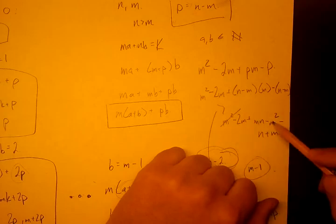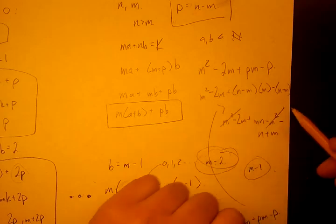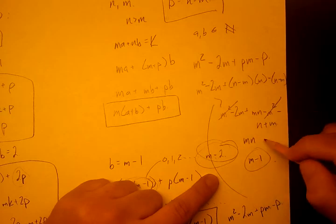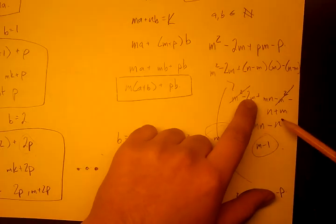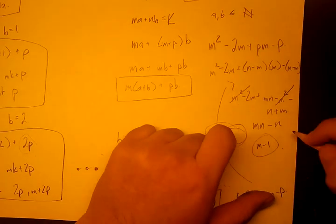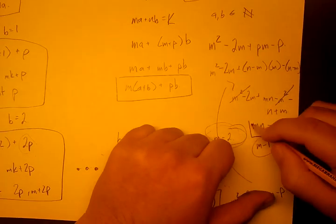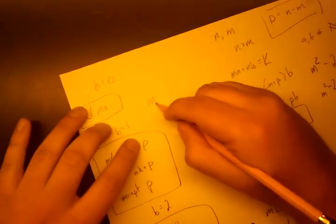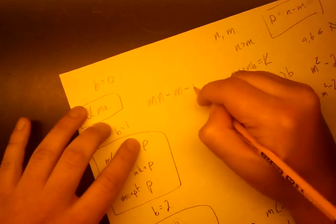So luckily, m² and m² cancel out, and we're going to have mn - n. And this is a negative 2m and a positive m, so it becomes negative m. So we found that the Frobenius number is given by mn - m - n.